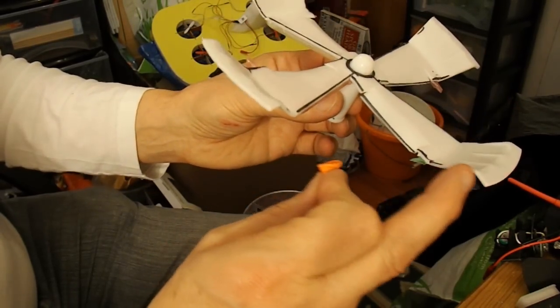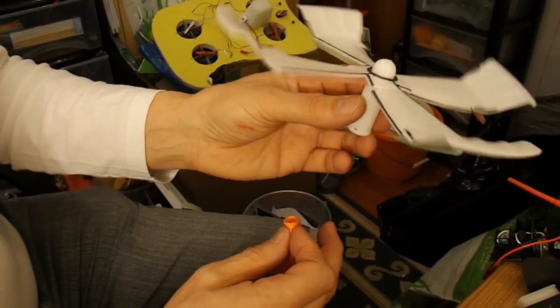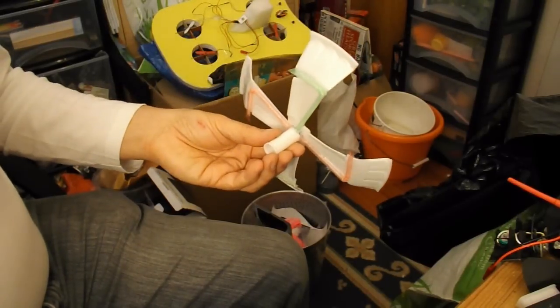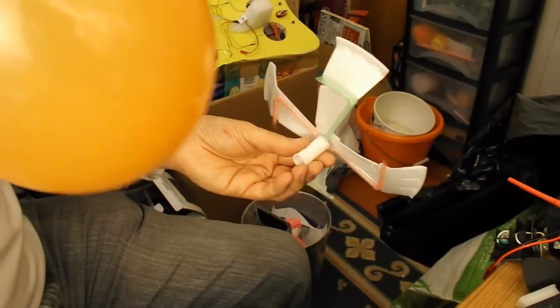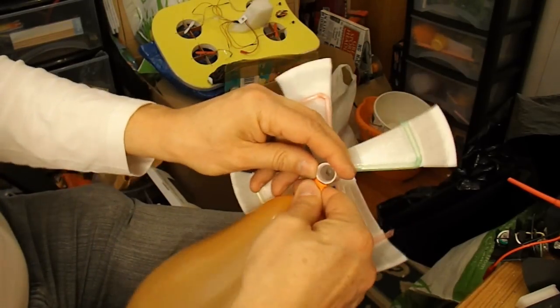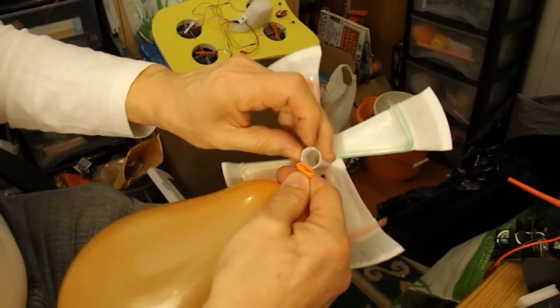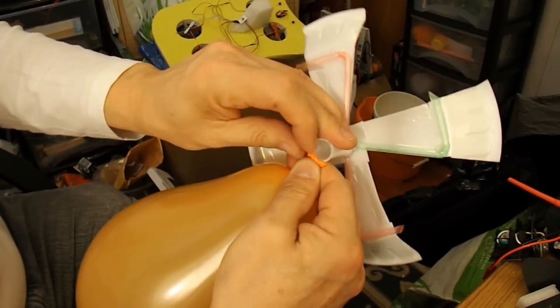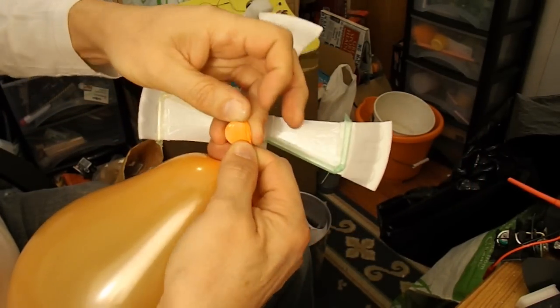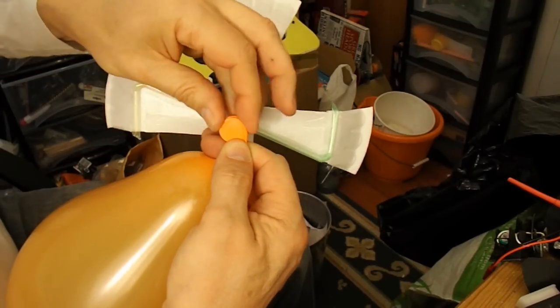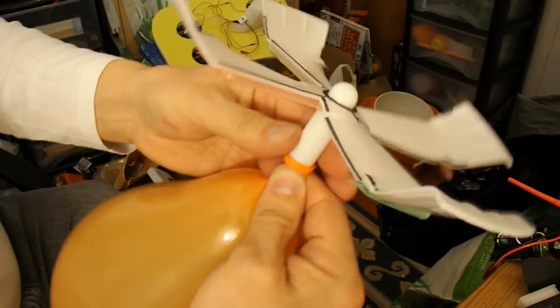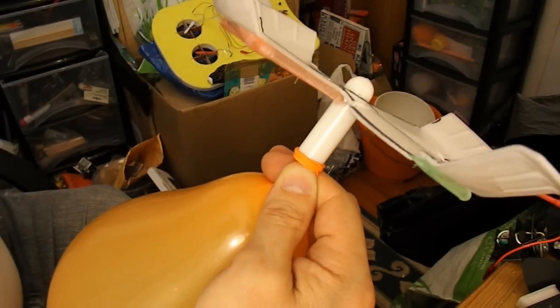Because we can also chop these bits off, I don't know whether they're helping or hindering. Alright, the trick is to try and trap part of the lip of the balloon on one side, and then pull it over. So, it's on. Now I'll go and demonstrate it not working.